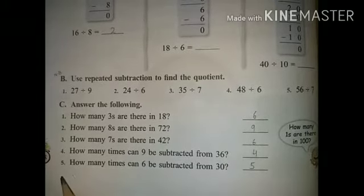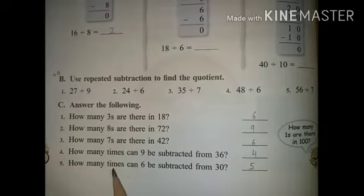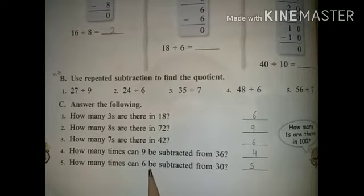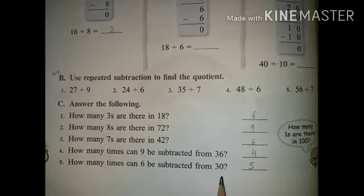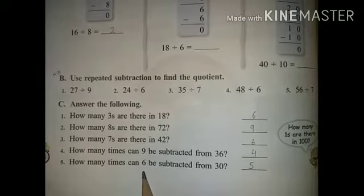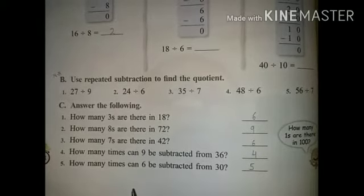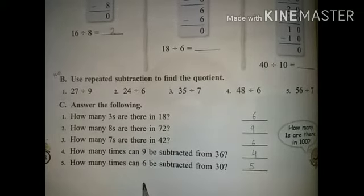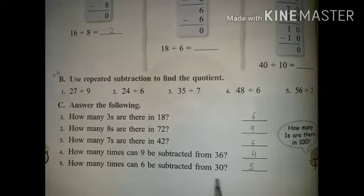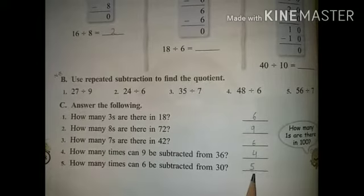9 goes 4 times. Fifth question: how many times can 6 be subtracted from 30? 30 divided by 6 — remainder 0, answer 5 times. Okay students?